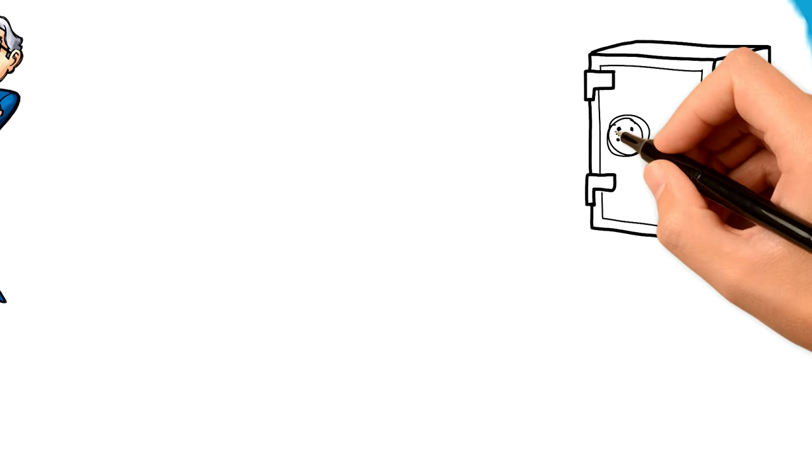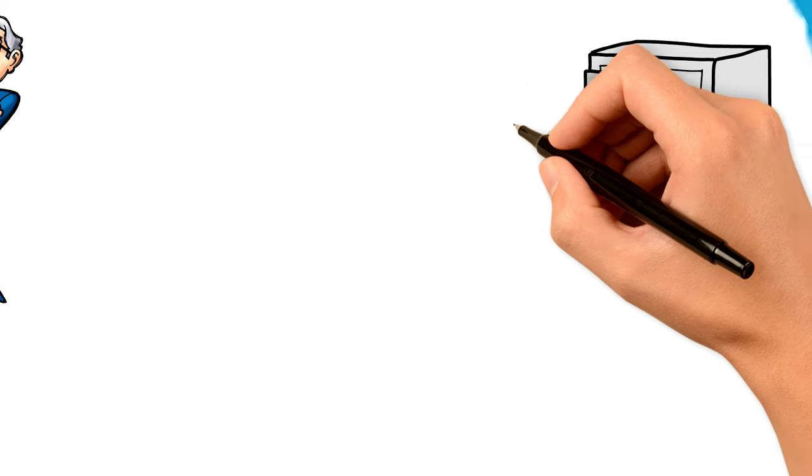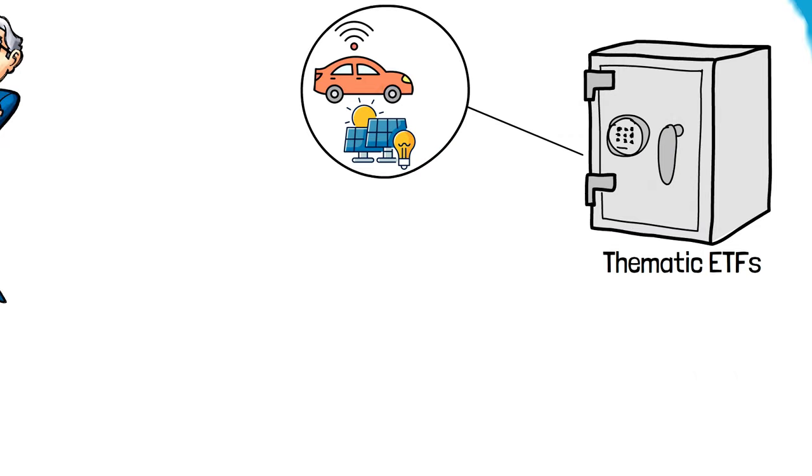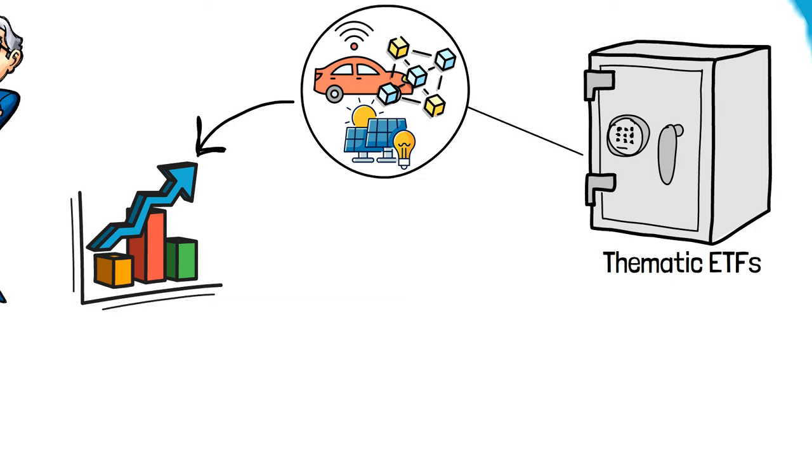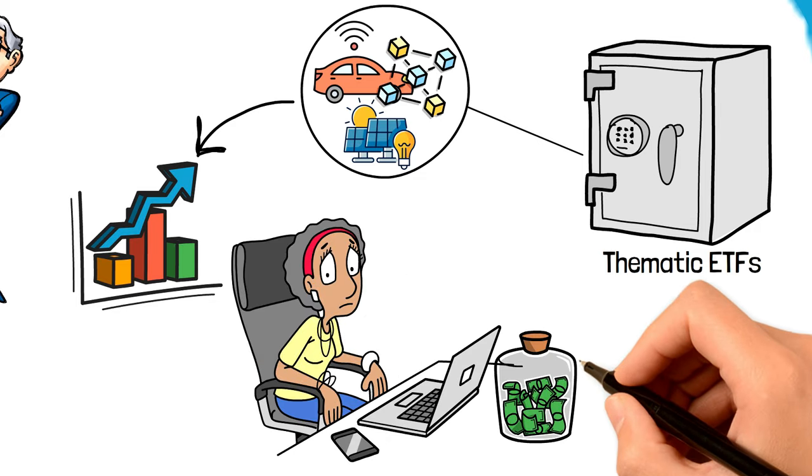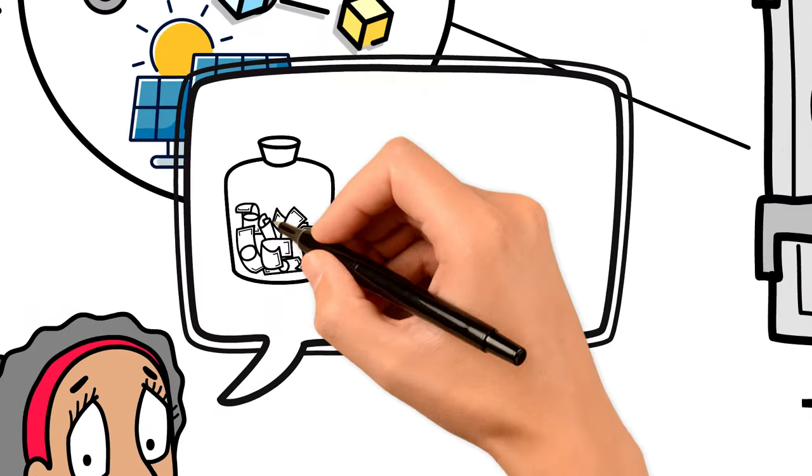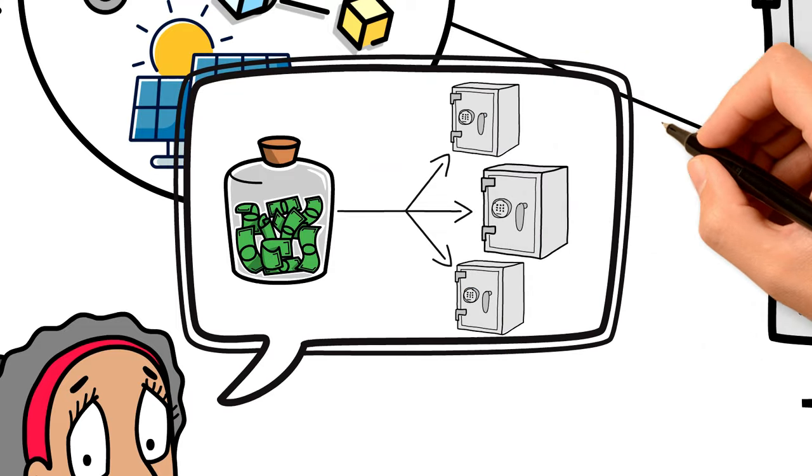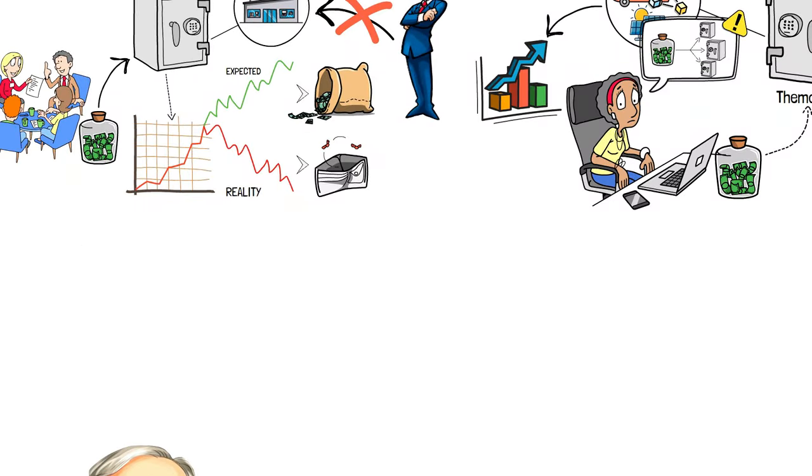Another trend worth noting is the recent surge in thematic ETFs, which focus on specific niches like electric vehicles, renewable energy, or blockchain technology. While these can offer exposure to emerging industries with high growth potential, they also exemplify the kind of over-diversification Buffett warns against. Investing in too many of these niche ETFs can lead to a scattered portfolio that's more vulnerable to market volatility.